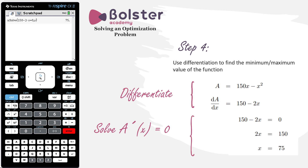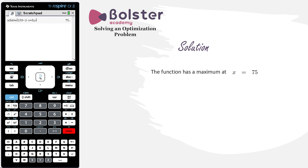So what is this telling us? This tells us that the maximum point occurs at x = 75. It does not mean that the maximum value is 75. Next, we substitute this value into the area function to get the actual maximum value of the area. Our area function is 150x - x².